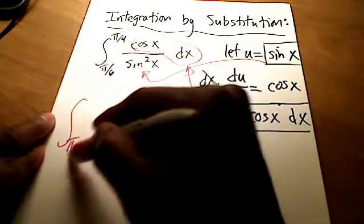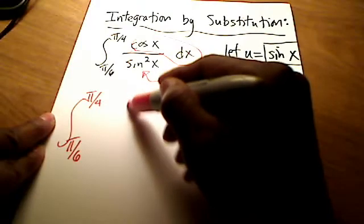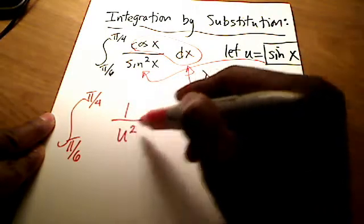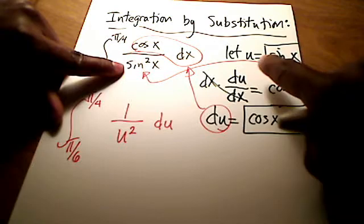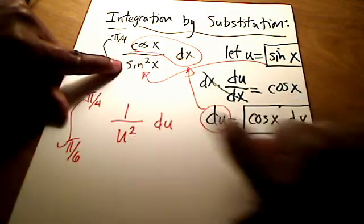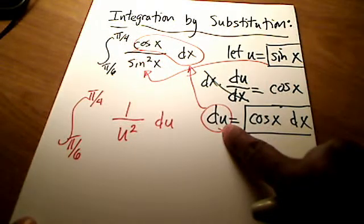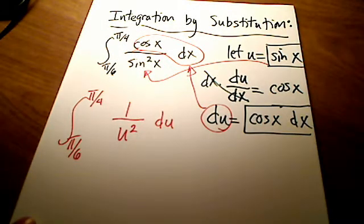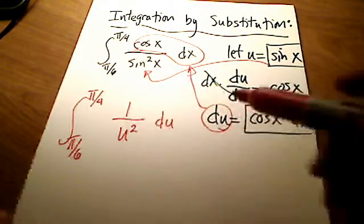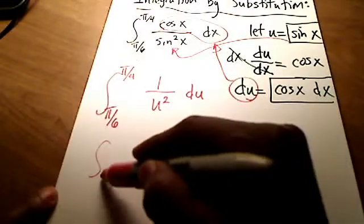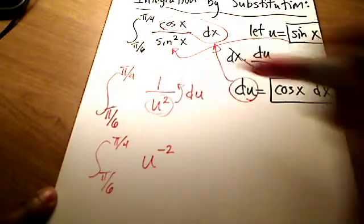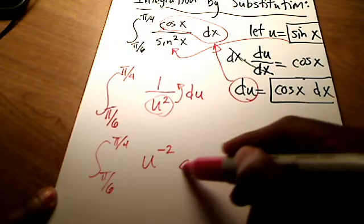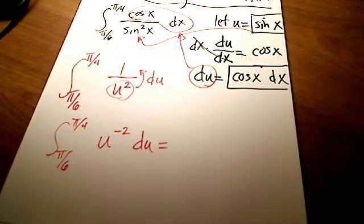This is sine squared x, so let me rewrite this. From pi over 6 to pi over 4, this is really 1 over u squared du. Where did the u squared come from? That was sine squared x, so instead of u I'm writing it as u squared because it was squared, and instead of cosine x dx I'm replacing it with just du. I prefer to rewrite this: let's bring u squared into the numerator, so I'll write it as u to the negative 2 du.